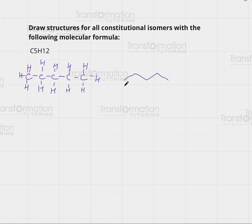So this is our first molecule. Now how could we change this to give us a different molecule, different structure but with the same number of carbons and hydrogens? The best way to change it is by shortening my chain by one carbon and adding that carbon somewhere else.